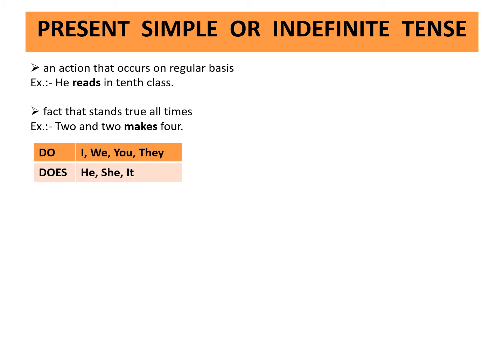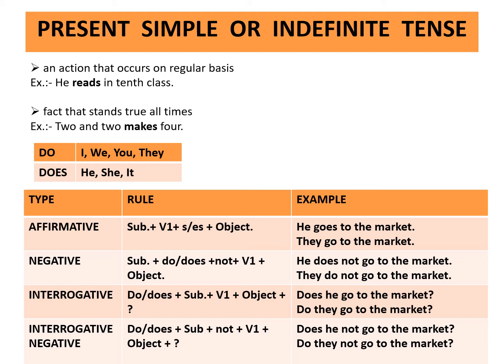Do is used with I, we, you, they. Does is used with he, she, it. Affirmative sentences mean positive sentences. Rule: subject plus first form of the verb plus S or ES plus object. Example: He goes to the market. They go to the market. Negative sentence is one in which 'not' is used. Rule: subject plus do or does plus not plus first form of the verb plus object. Interrogative sentence is one in which a question mark is used. Rule: do or does plus subject plus first form of the verb plus object plus question mark. Example: Does he go to the market?